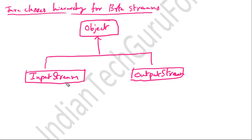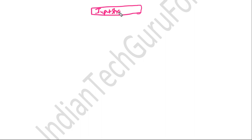Now let us see what are the classes that are derived from the InputStream class as well as the OutputStream class. As far as the InputStream class is concerned, the InputStream class is derived from the Object class.